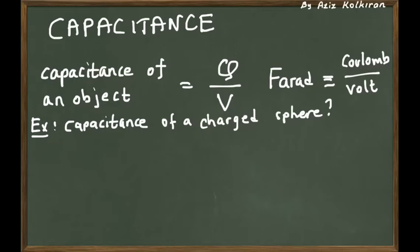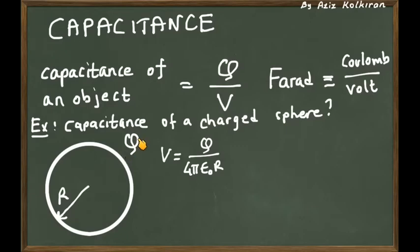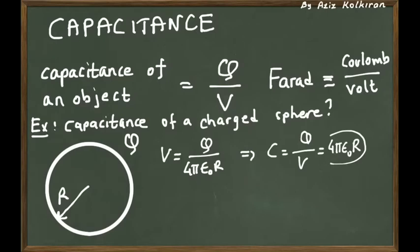Let me calculate the capacitance of a charged sphere. If it has charge Q and radius R, whether this sphere is a solid sphere or a shell doesn't matter, because both have the same potential. The potential only depends on the radius and the charge Q. So its potential is Q divided by 4πε₀R, where 1 over 4πε₀ is just K, the Coulomb constant. Calculating Q divided by V, the capacitance is 4πε₀ times R.